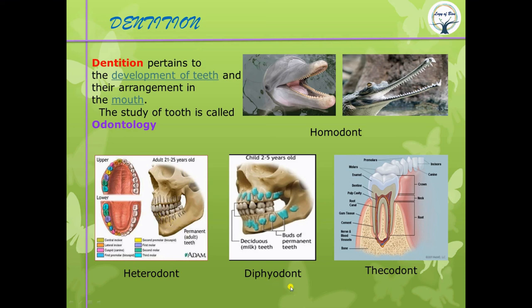Humans are diphyodont, meaning we have two sets of teeth: milk teeth and permanent teeth. Humans are also thecodont, meaning our teeth are embedded in sockets. So to summarize: heterodont — different types of teeth; diphyodont — two sets of teeth (deciduous and permanent); thecodont — teeth embedded in sockets.